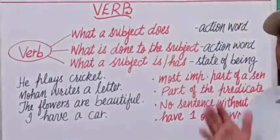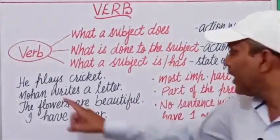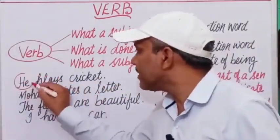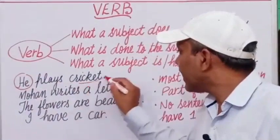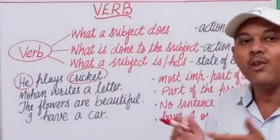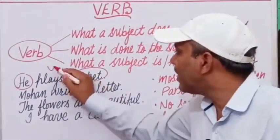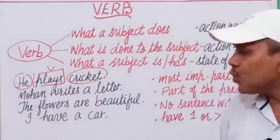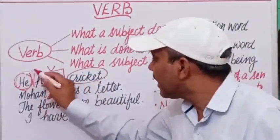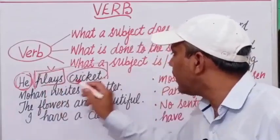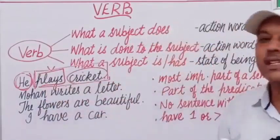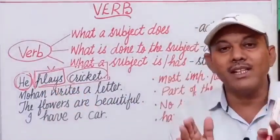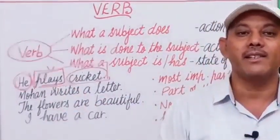If a word tells us about the possession of something or the state of being of something, it is also a verb. For example: 'He plays cricket.' Here 'he' is the subject, 'cricket' is the object, and 'plays' is a verb. The subject is one part, and the rest is known as the predicate of a sentence. A verb is always part of the predicate.